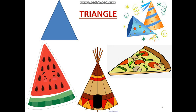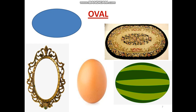Our next shape is oval. The oval has no sides and no vertices. The oval is round but it is spread vertically or horizontally. The oval objects include a mirror, a mat, a watermelon and an egg. If you eat an egg for breakfast, you can see it in front of you — an egg is an oval shape. Watermelon is also an oval shape.